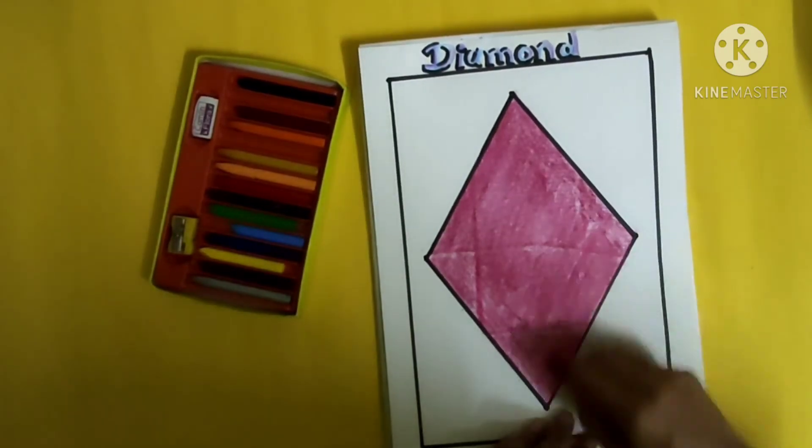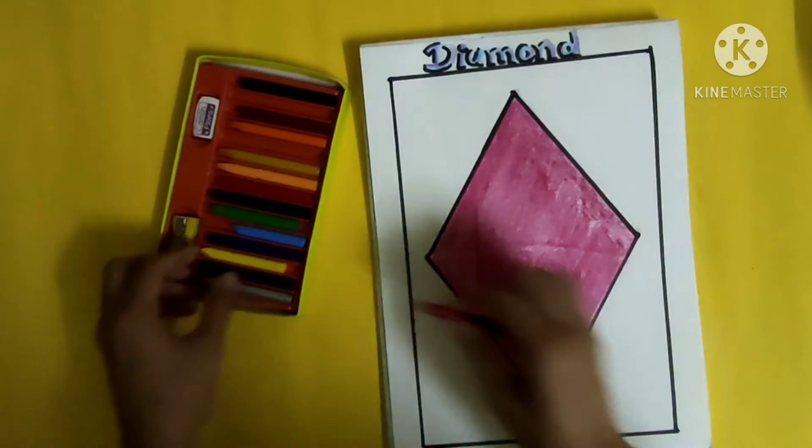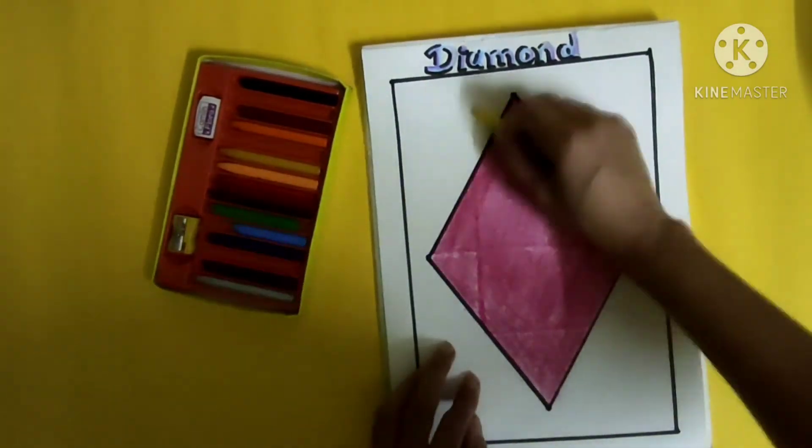So tell me again, which shape is it? It's a diamond.